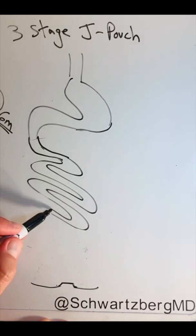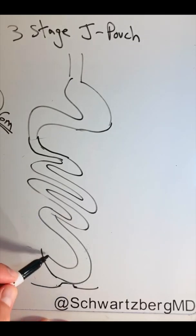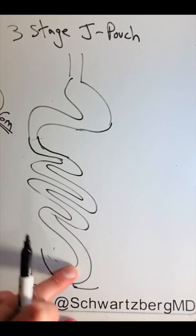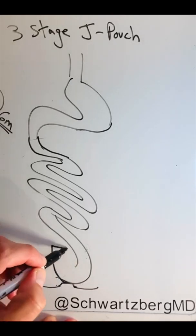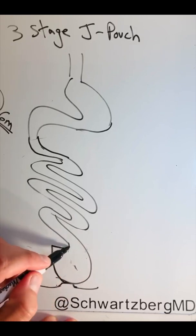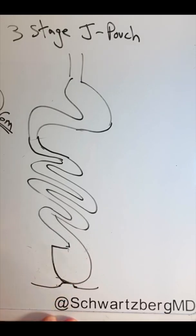And then the small bowel is made into the shape of a J and through a series of staple firings is made to look like a reservoir, which functions as a rectum.